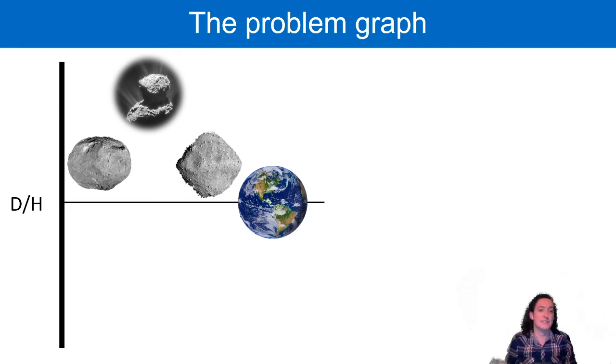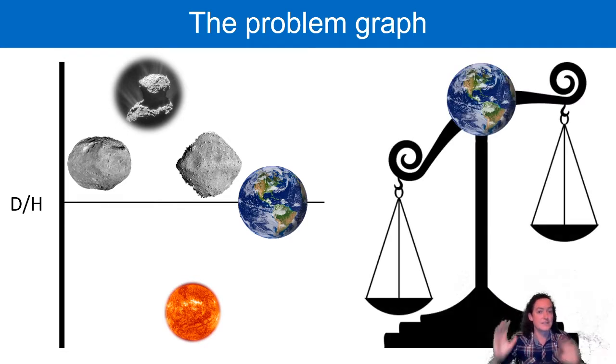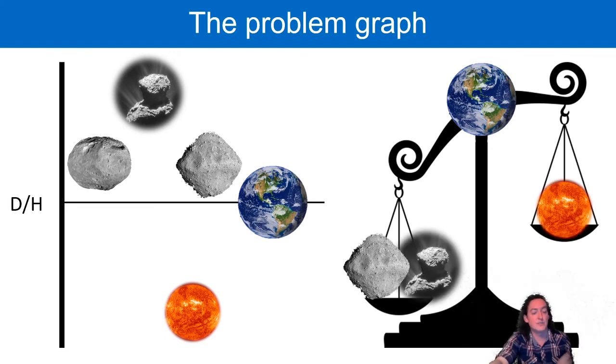The key problem in all of this is none of those three things can come together to make the earth. You can't add three heavy things to get a lighter thing. Annoyingly, the only thing on the other side of this graph is the sun. And now I'm not suggesting we throw the sun at the earth because that would be bad for everybody involved, but we need some way of balancing this isotopic book. We need a light deuterium hydrogen ratio reservoir to balance the heavy water rich asteroids and cometary contributions.